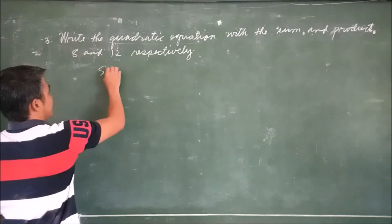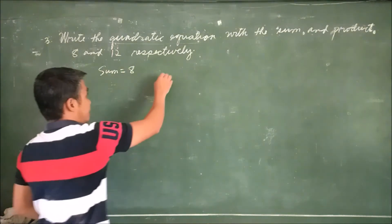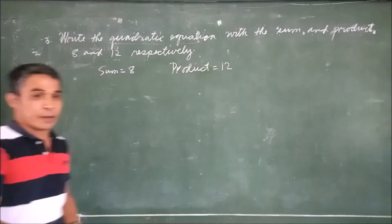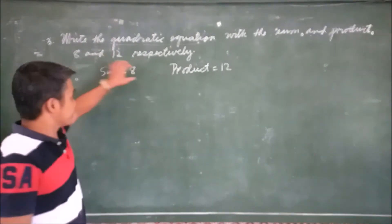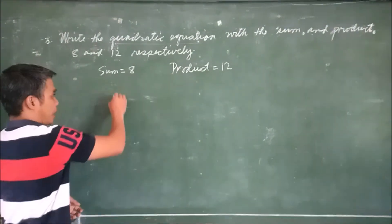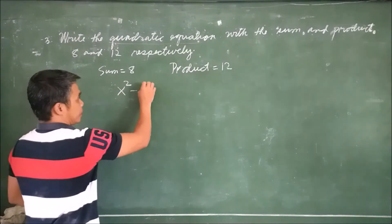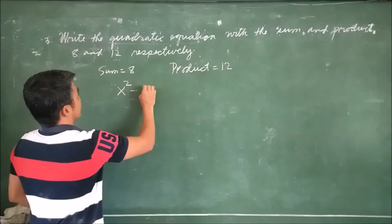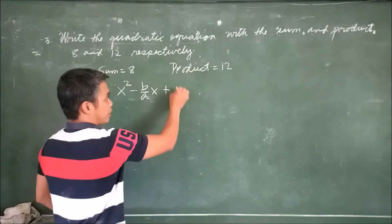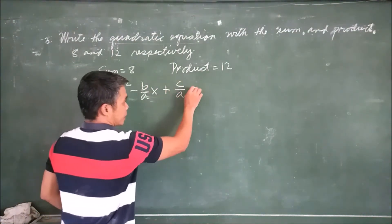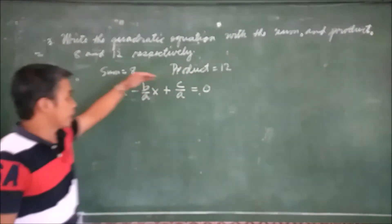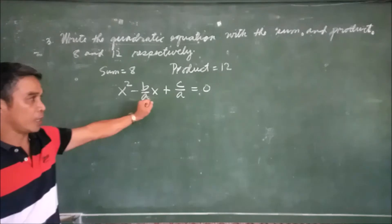Given: the sum equals 8 and the product equals 12. When the sum and product are given, the formula we use is: x² minus (b over a)x plus (c over a) equals 0, where b over a is the sum and c over a is the product. Remember this formula when sum and product are given.